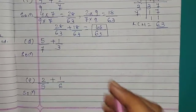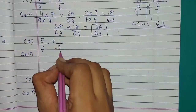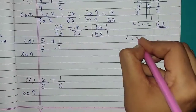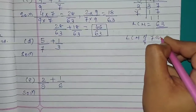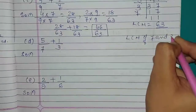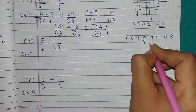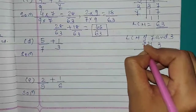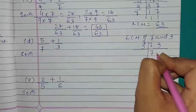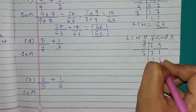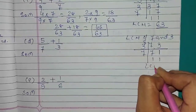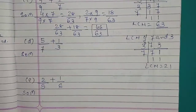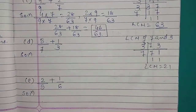Question number D: 5 upon 7 plus 1 upon 3. We will take LCM of 7 and 3, which equals 21.